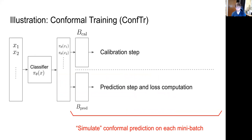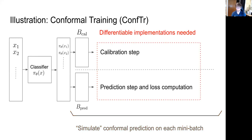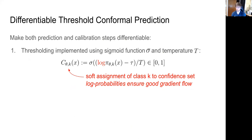The core idea is to simulate conformal prediction on each mini-batch during SGD training. We forward examples through the model to get posterior probabilities, then split the mini-batch in two halves — a calibration half and a prediction half — as we would at test time. Making the prediction step differentiable is straightforward if we make conformity scores differentiable. For the threshold predictor using log probabilities, we approximate the thresholding operation with a sigmoid function parameterized by temperature t, recovering hard thresholding as t approaches zero.